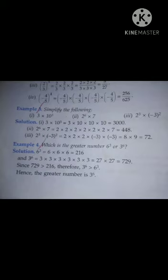Example number 4. Which is the greatest number? 6 to the power 3 or 3 to the power 6. So, first we write 6 to the power 3. It means 6 into 6 into 6, which is 216. And then we write 3 raised to the power 6. So, we multiply 3 six times. And the answer is 729. So, 729 is greater than 216. So, final answer is 3 raised to the power 6 is greater than 6 raised to the power 3.